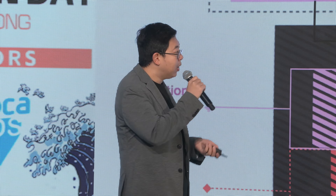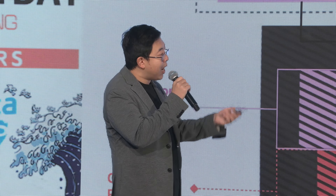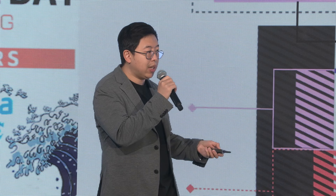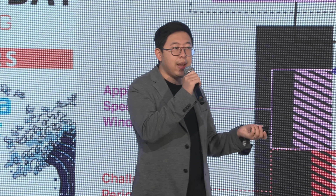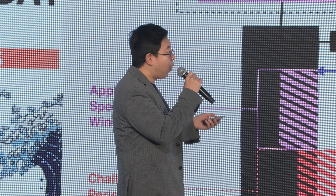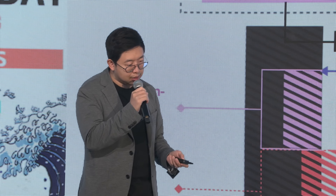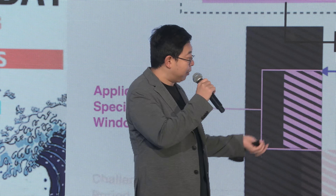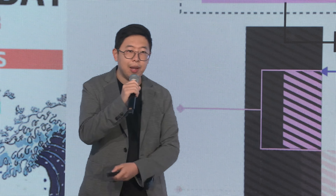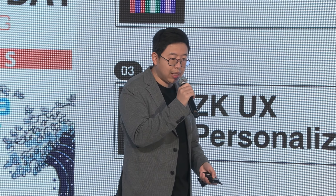During that challenge window, if someone spots an error in the computation, a challenge can be initiated. A ZK proof can then be submitted on-chain to slash whoever submitted the wrong results. The Brevis token plays a role here as the staking token.